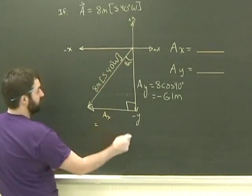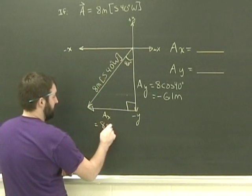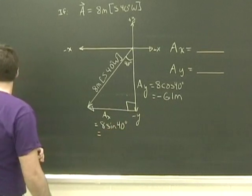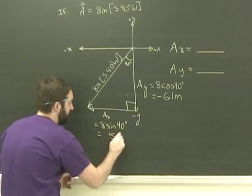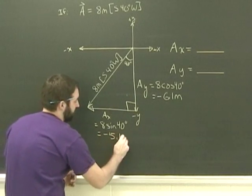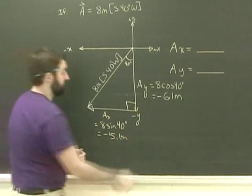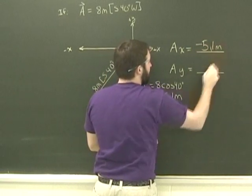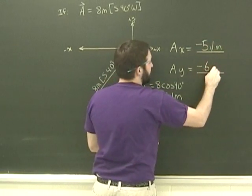Ax equals 8 sin 40, which is 5.1. Again, it's negative. Still need units though. So, Ax is minus 5.1 meters, and Ay is negative 6.1 meters.